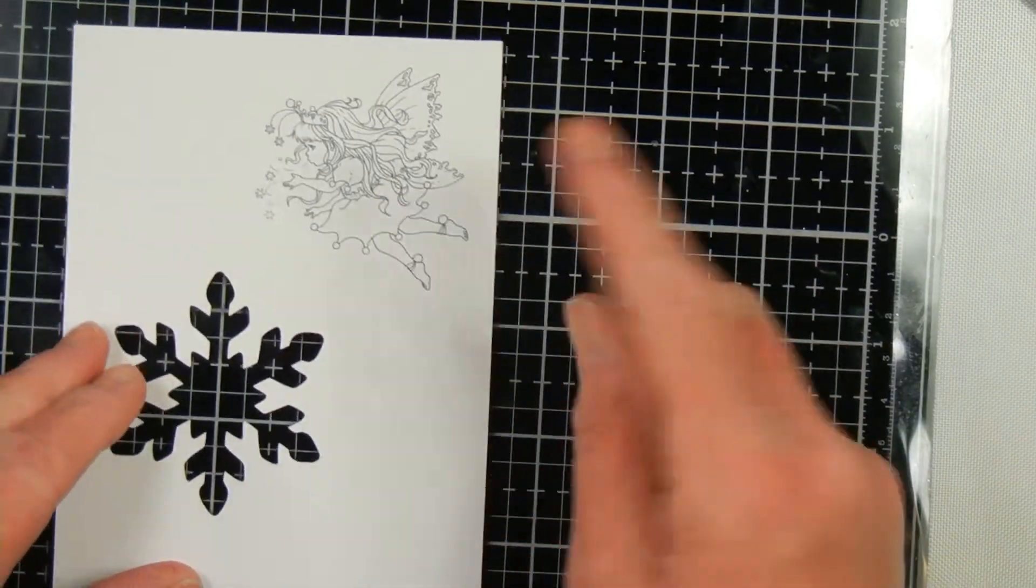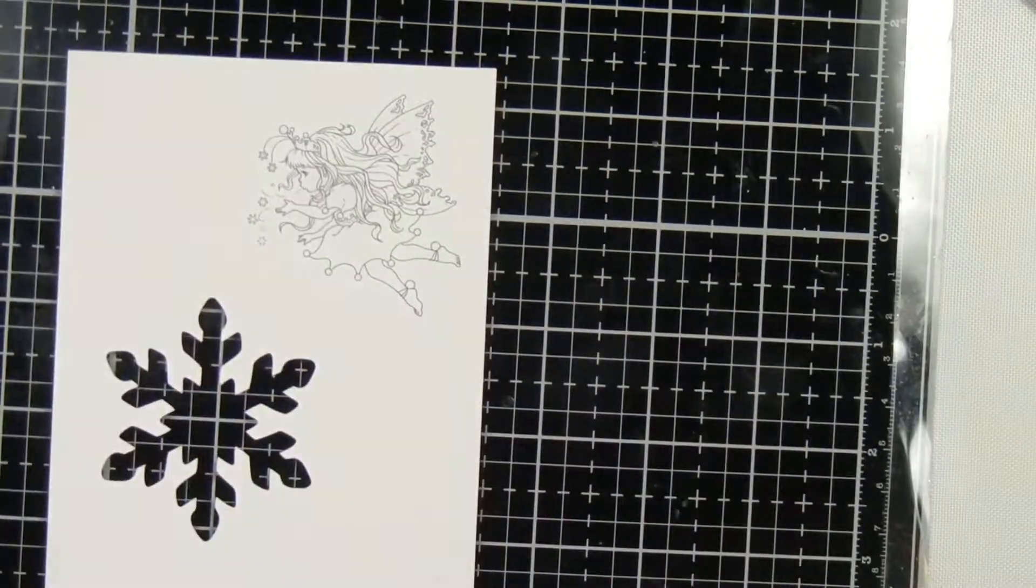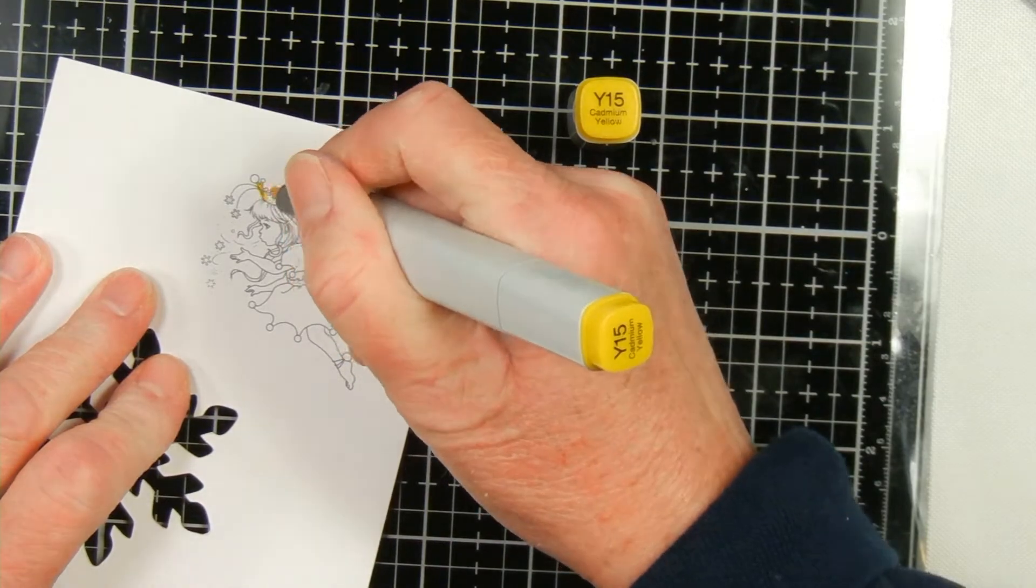Hello and welcome to the Wayfaring Panda. I'm Annette. Today I'm making a winter themed card with a whimsy digital stamp and turning it into a shaker card.